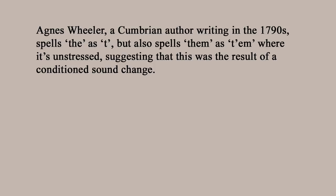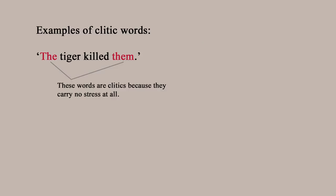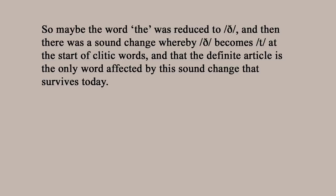As it happens, we do find spellings suggesting this might have been true in at least some northern dialects in the 1700s. Agnes Wheeler, a Cumbrian writer using a very conservative form of Cumbrian that preserves vowels from before the Great Vowel Shift, spells these clitic words as though that change is taking place more systematically. A clitic word is one that's totally unstressed within a sentence and relies on the stress of the words around it — in 'the tiger killed them,' 'the' and 'them' are clitics. It may be that in the clitic forms of words like 'the' and 'them,' the TH sounds were reduced to T, and the definite article is the only one that survived.